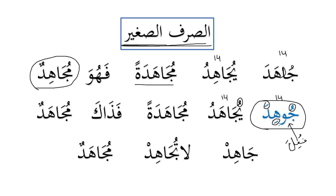The passive of the مضارع: يُجاهَد (with فتحة on the second-last root letter). Note the Alif comes back in the present passive because the letter before it has فتحة — so it becomes يُجاهَد. Compare: يُجاهِد (active, كسرة) vs. يُجاهَد (passive, فتحة). فعل الأمر: جاهِد. فعل النهي (negative command): لا تُجاهِد.